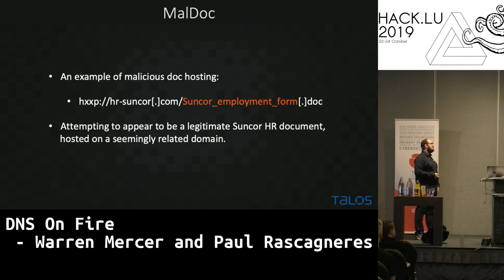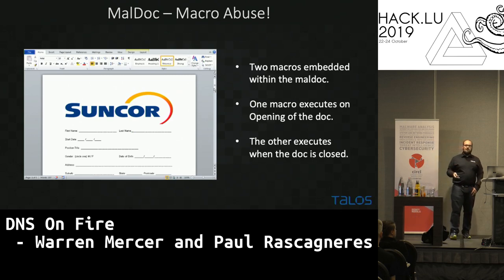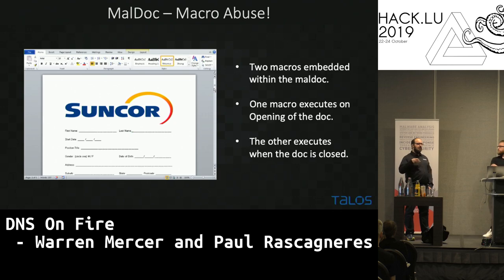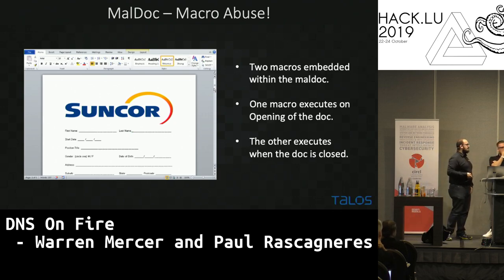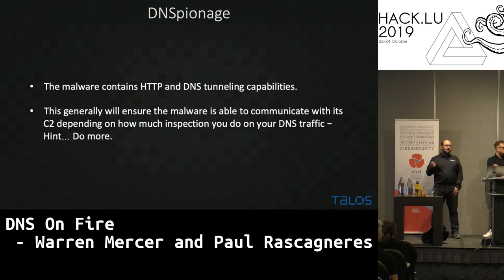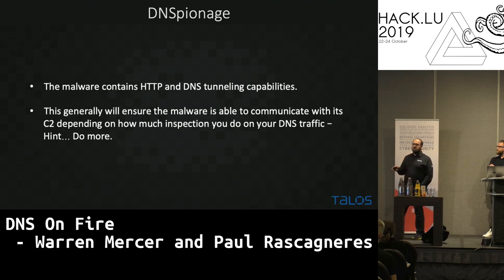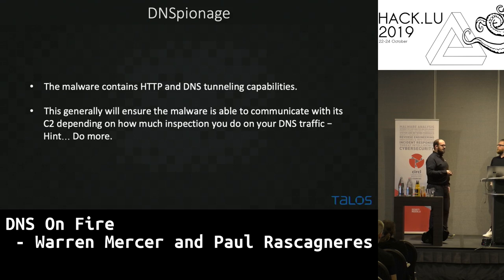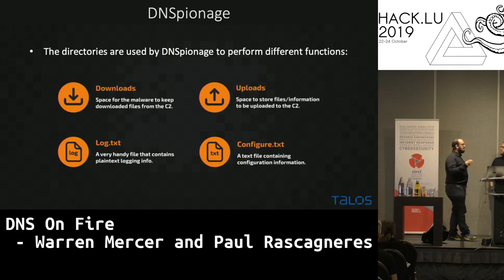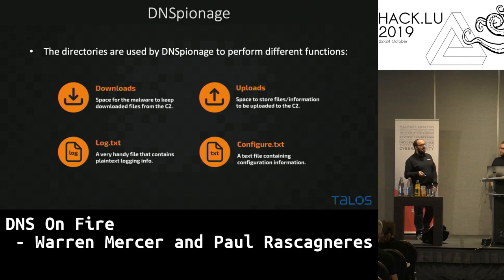The document itself was nothing really amazing — a classical document with a malicious macro inside. The document is a real one: the attackers went to the real Suncar website, found a form, took the form, and simply added a macro to it. So the document could be downloaded without the macro from the Suncar website. The macro deployed the malware on the machine, and the malware executed. The malware supports two kinds of protocols: HTTP, which is very common, and DNS tunneling, which is less common than HTTP.